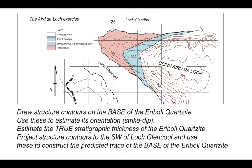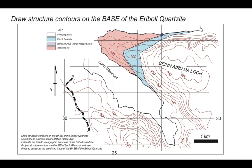Let's first identify the base of the Arable Quartzite. We're going to construct structure contours on it. In the dark blue blob, I've picked where the base of the Arable Quartzite comes down to sea level. On the southwest side of the peninsula we can find the same boundary down at sea level again — therefore at the same elevation, zero meters. Joining those two points creates a structure contour showing the position of the base of the Arable Quartzite at an elevation of zero meters.